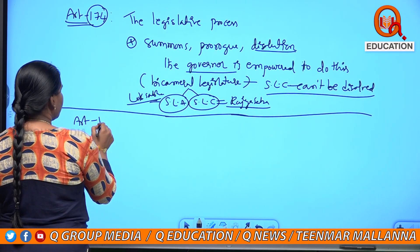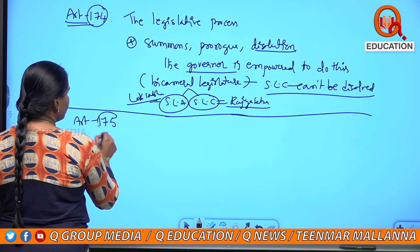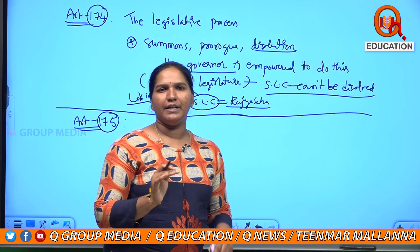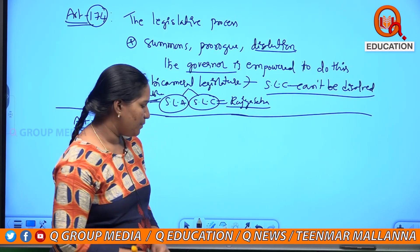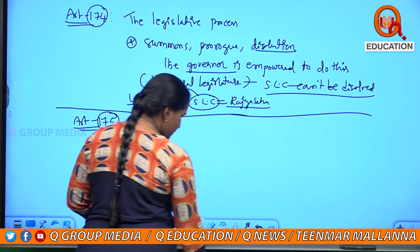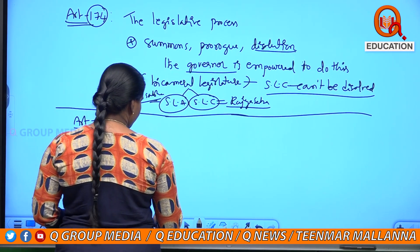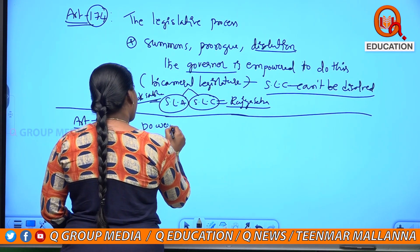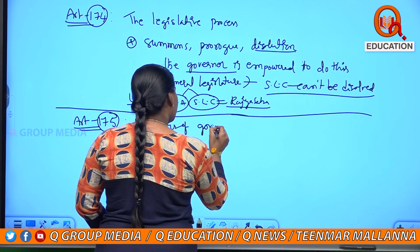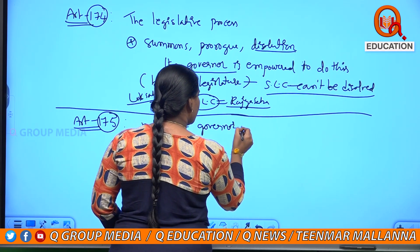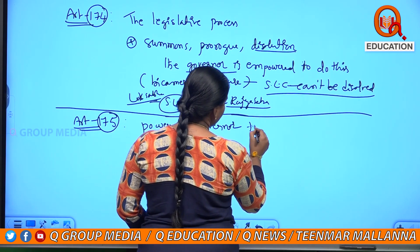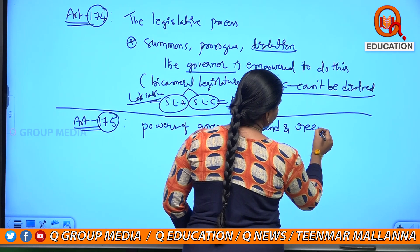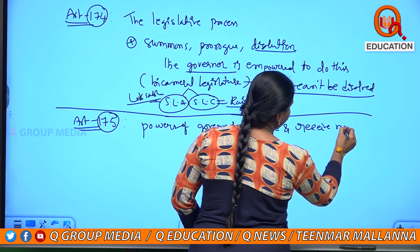This is Article 174. Next, Article 175 deals with the powers of the governor to send and receive messages — that is, information to and from the state legislature, both houses.